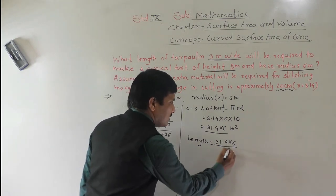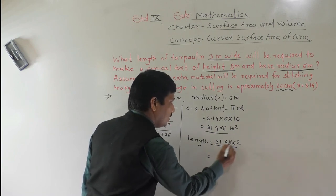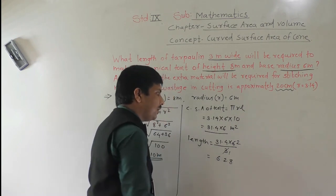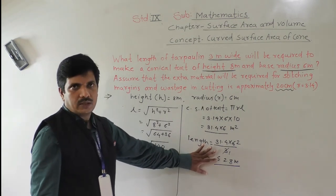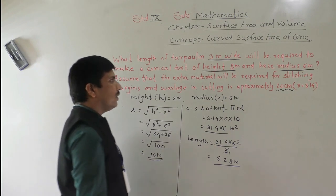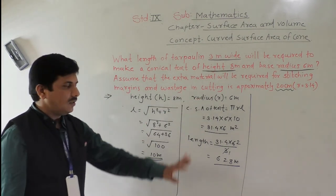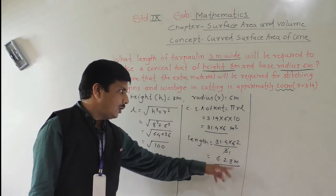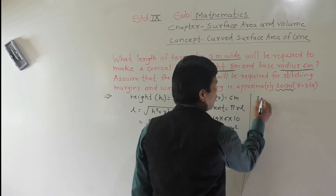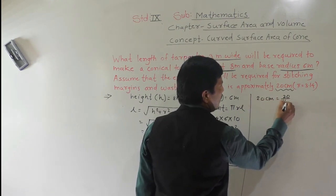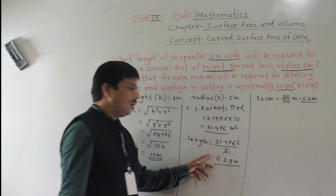Calculating: (31.4 × 6) ÷ 3 = 62.8 meters. This is the length of tarpaulin needed for the cone alone. But 20 centimeters of extra material is required for stitching, and we convert 20 cm to meters: 20 ÷ 100 = 0.2 meters. We need to add this.